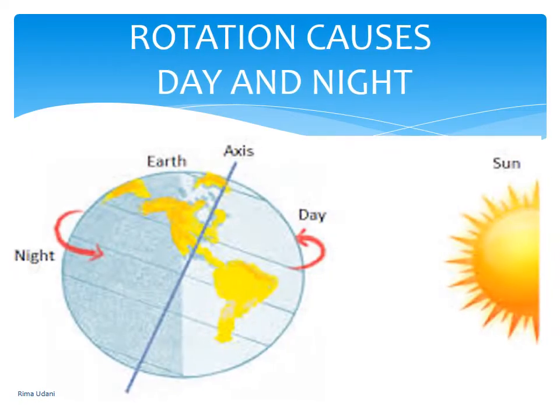When the earth rotates on its axis, it causes day and night. The earth receives light from the sun, but due to its spherical shape, only half of it gets light at a time. The portion facing the sun experiences day, while the other half, away from the sun, experiences night.